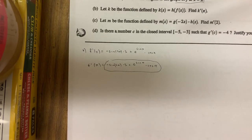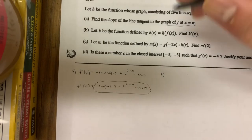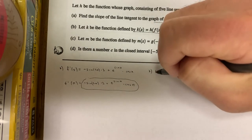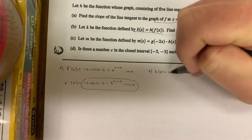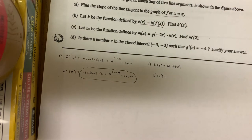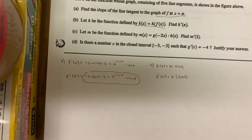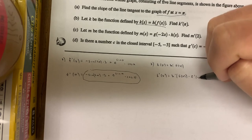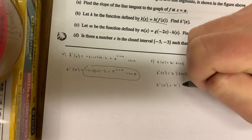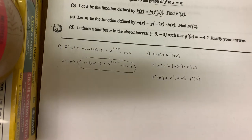Part b: let k(x) = h(f(x)), a composite function. They want k'(π). By the chain rule, k'(x) = h'(f(x)) · f'(x). So k'(π) = h'(f(π)) · f'(π). You can't leave it in function notation — you need to evaluate. f(π) = cos(2π) + e^(sin π) = 1 + e⁰ = 2. So you need h'(2), the slope of the graph of h at x = 2.